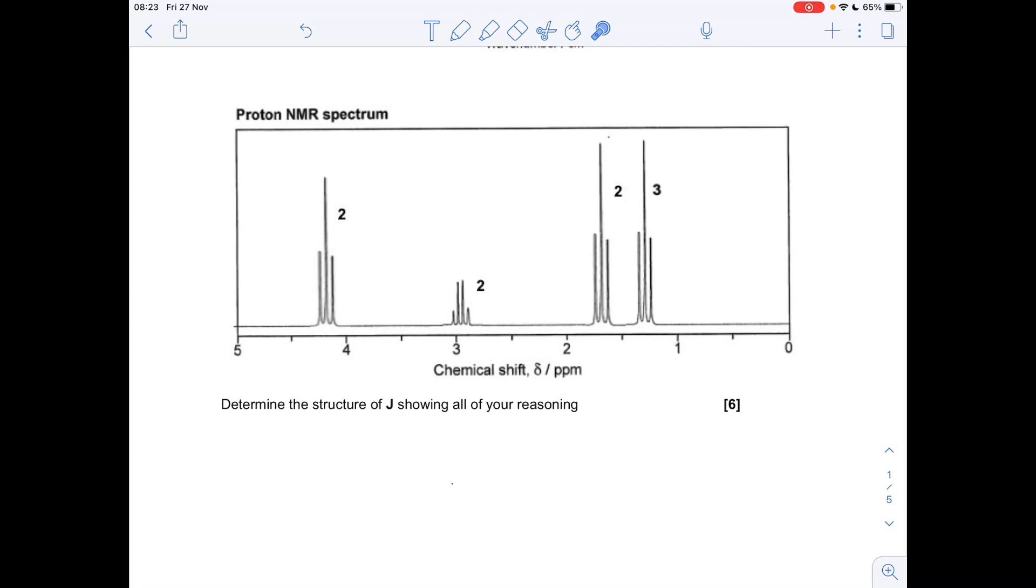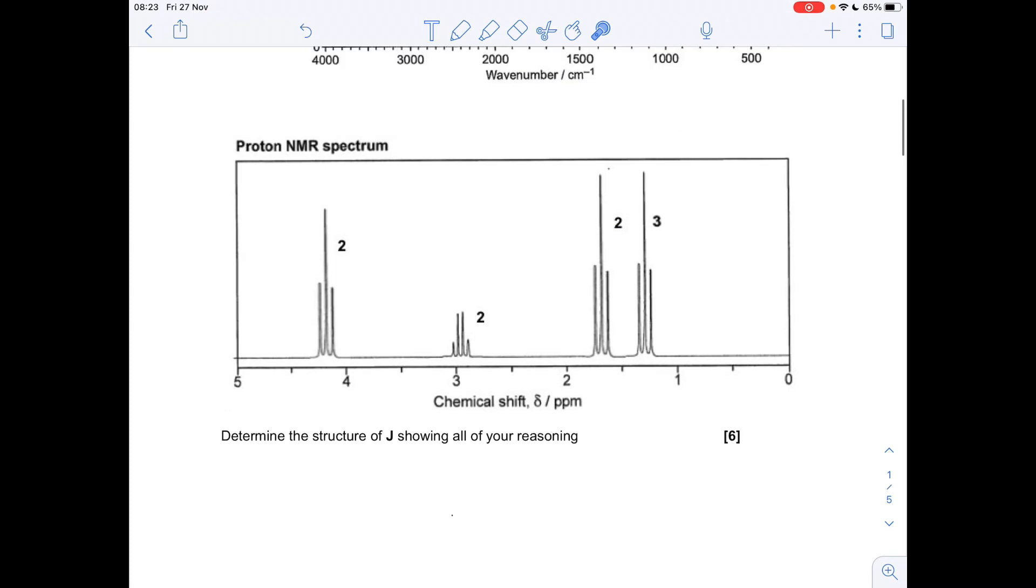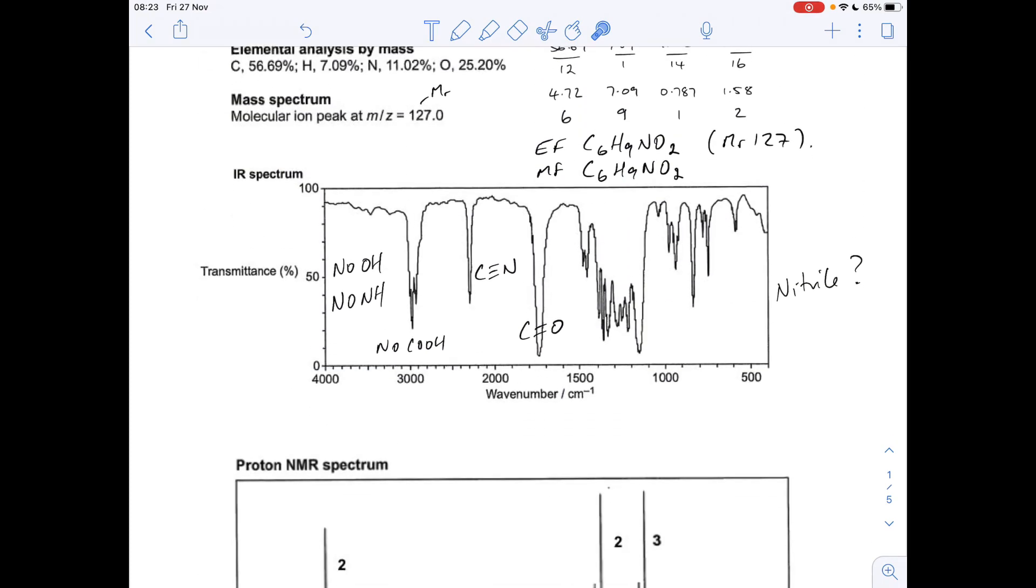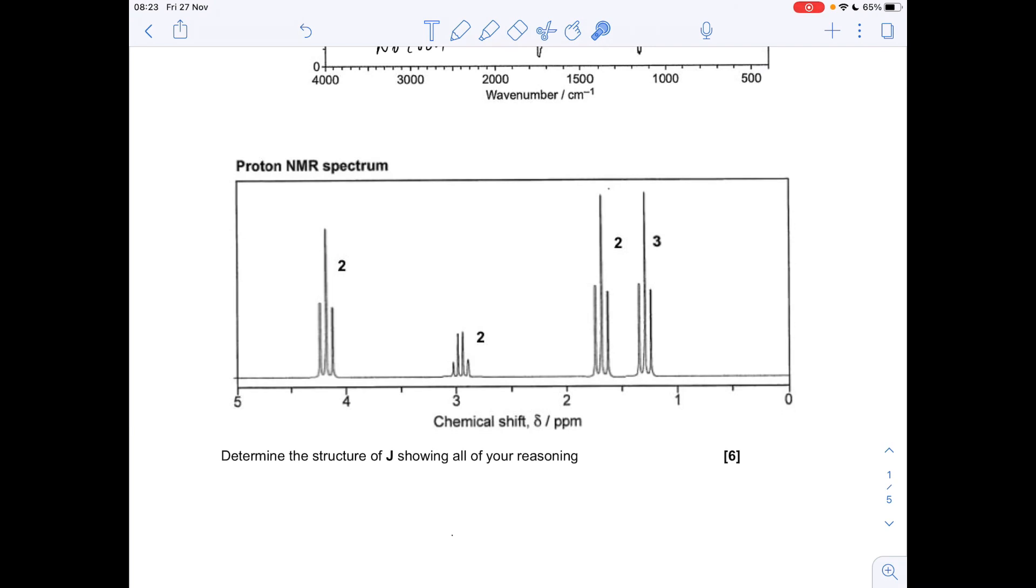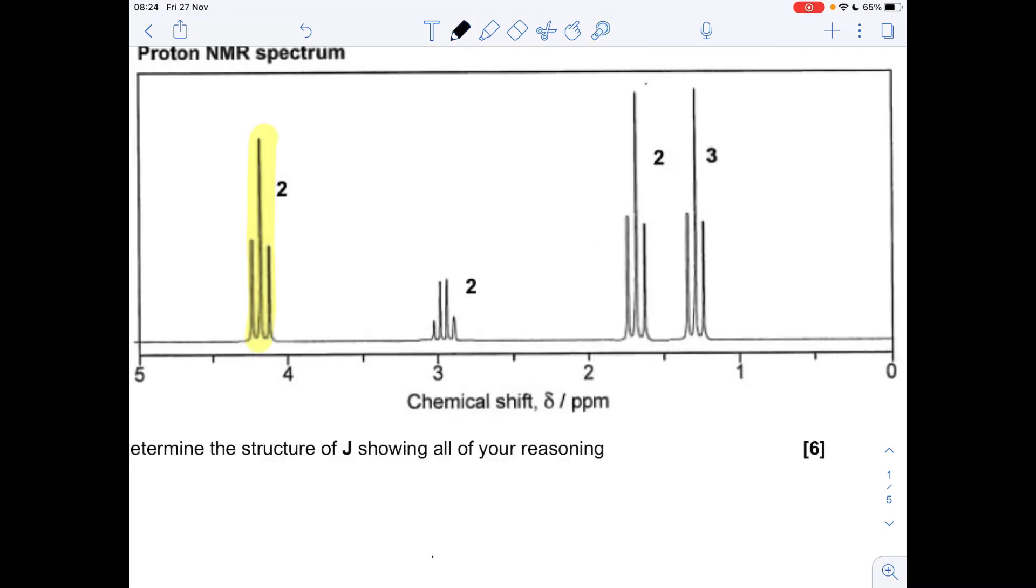Before I start, if you add up the ratio of integration values—2, 4, 6, so 9—and you go to the molecular formula, you've got H9 there. These are the actual number of hydrogens in this molecule. Sometimes the ratios might be twice or three times as many in the actual molecule. These are the actual numbers because the area values add up to the hydrogens in the actual molecule.